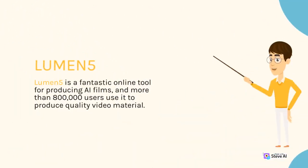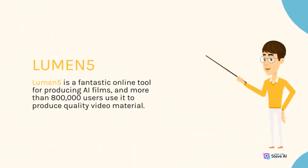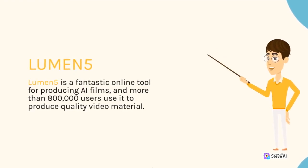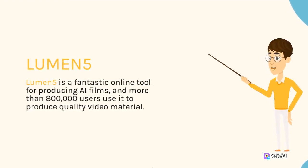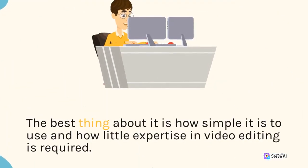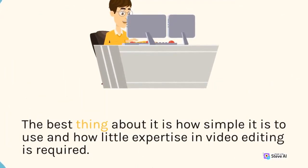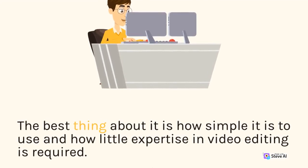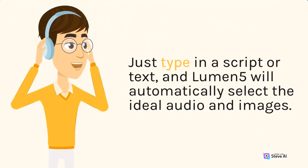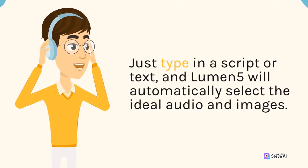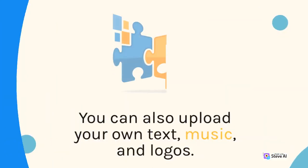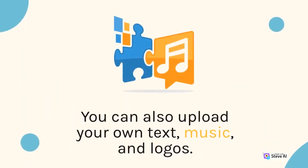Lumen5 is a fantastic online tool for producing AI films, and more than 800,000 users use it to produce quality video material. The best thing about it is how simple it is to use and how little expertise in video editing is required. Just type in a script or text, and Lumen5 will automatically select the ideal audio and images. You can also upload your own text, music, and logos.